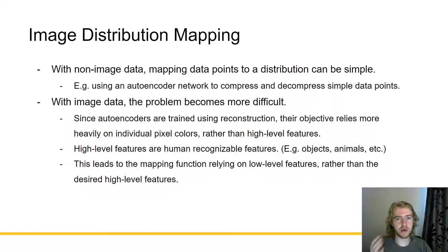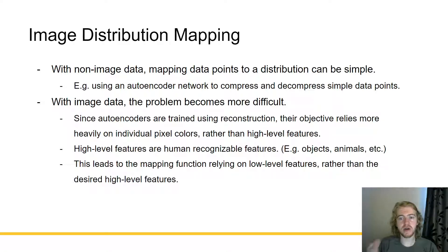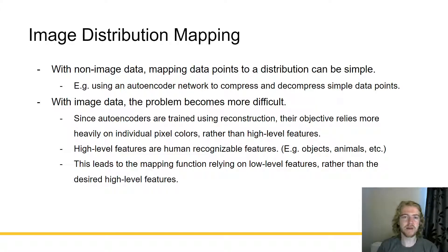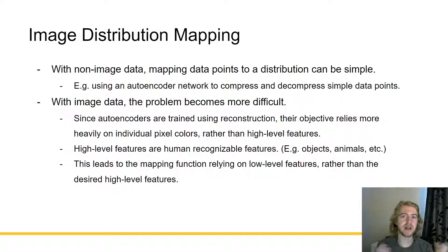High level features are what we really want, and high level features are things that would be human recognizable — things like objects, animals, different features like that. Things that are a bit more complex for pattern recognition. This leads to the mapping function, using just an autoencoder, relying on low level features rather than our desired high level features. For example, in the horse and zebra example, we would not want to look at necessarily all the colors because there can be white horses, black horses, etc. Rather we would want to look at high level features like does this horse have stripes, or what kind of setting is this horse in. If it's not in the right setting or if it has stripes, then it's probably an anomaly — probably a zebra.